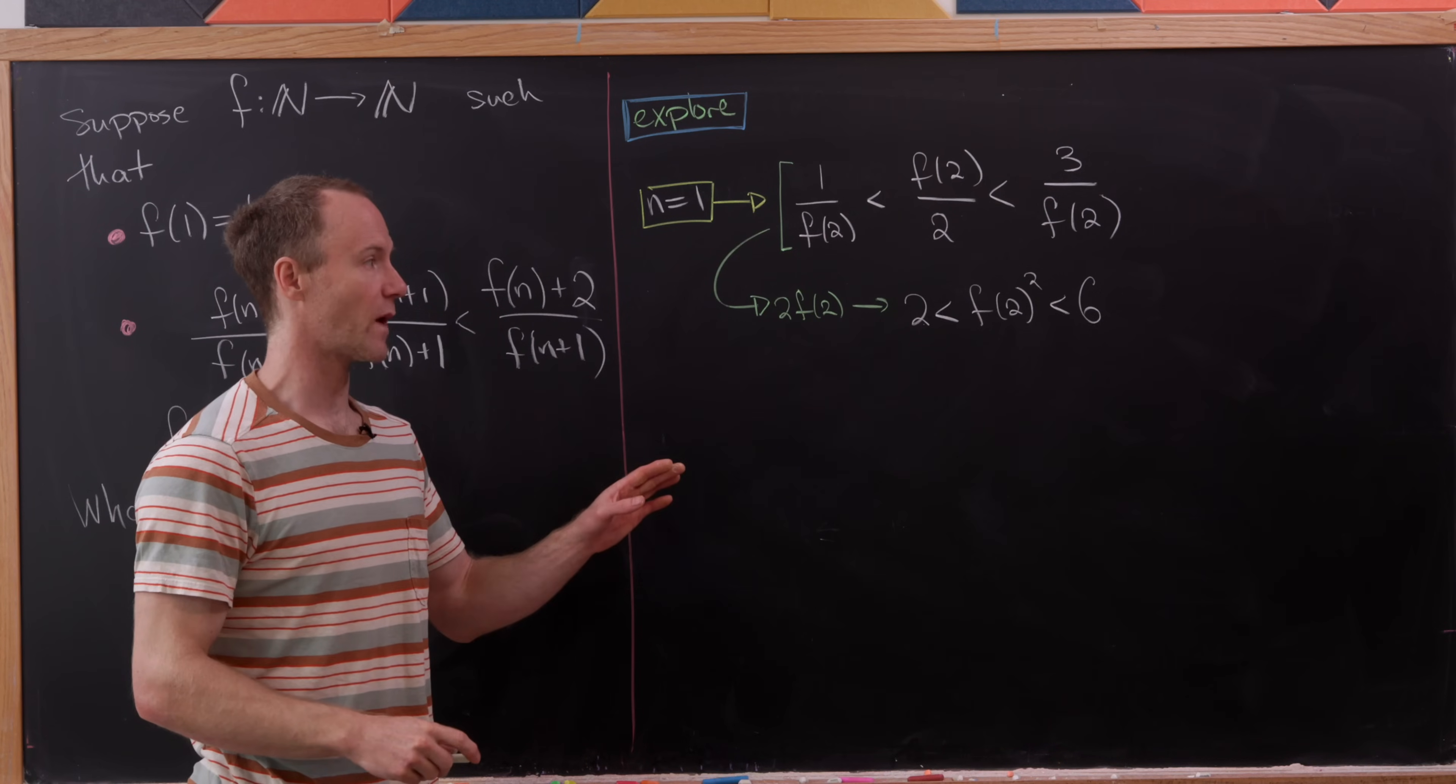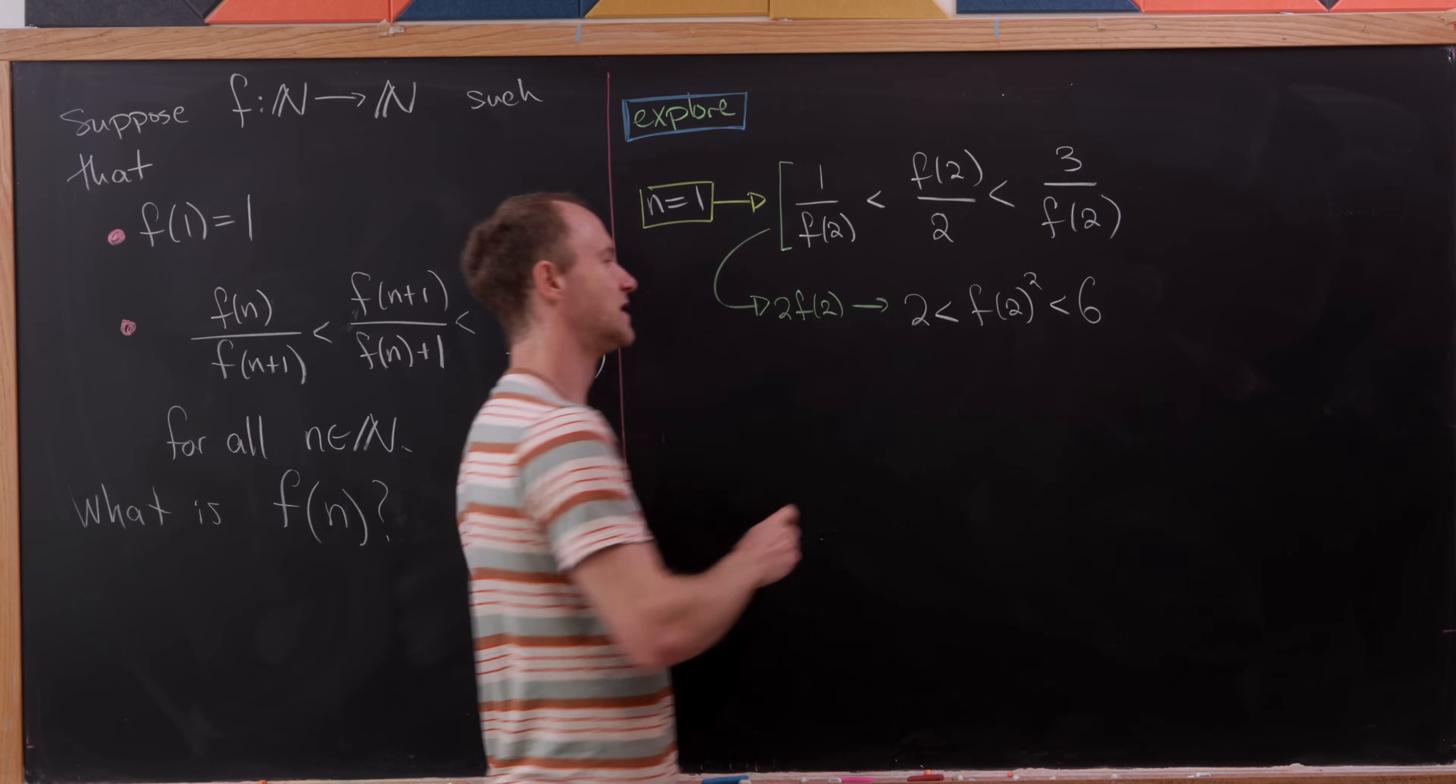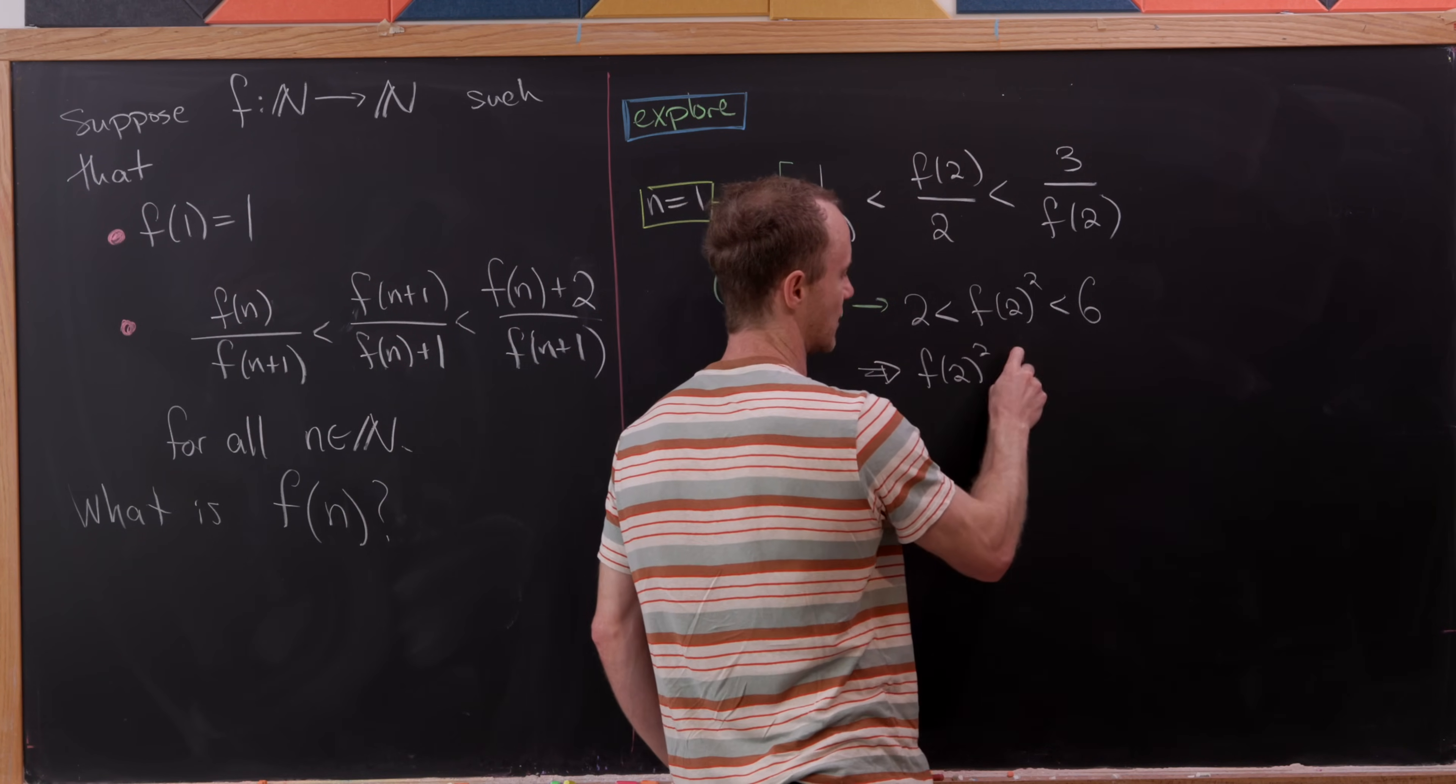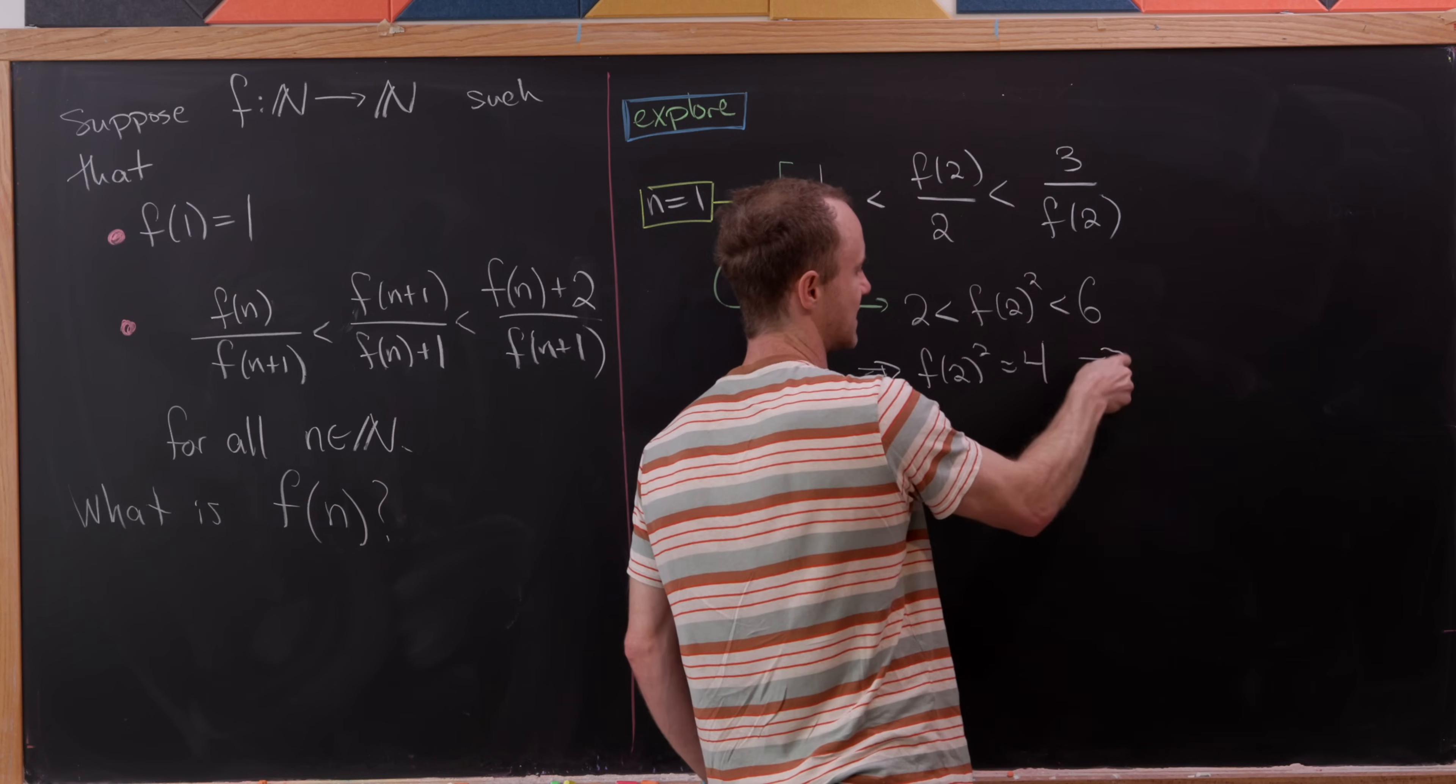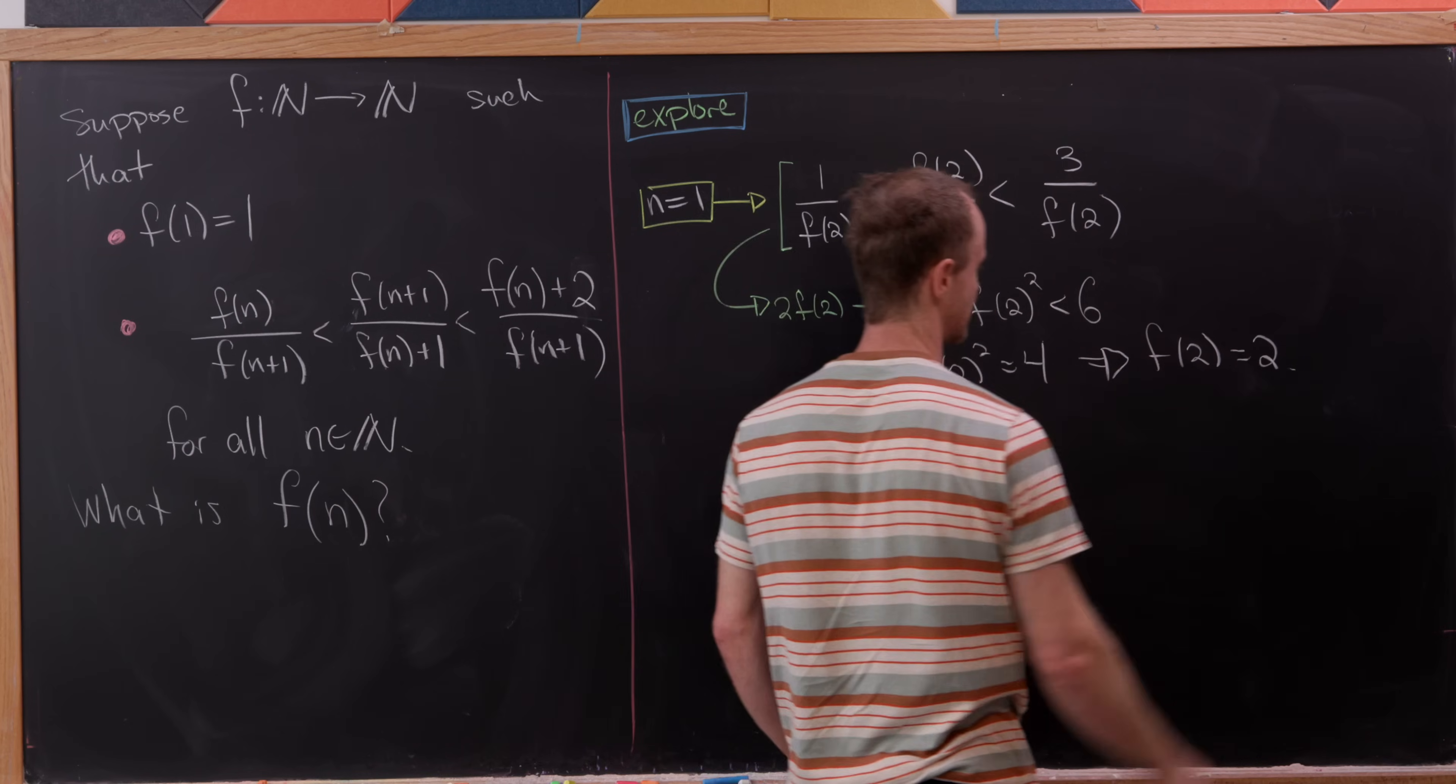So that means f of two squared is a perfect square between two and six, but obviously there's only one perfect square between two and six and that's the number four, and thus f of two must be equal to two.